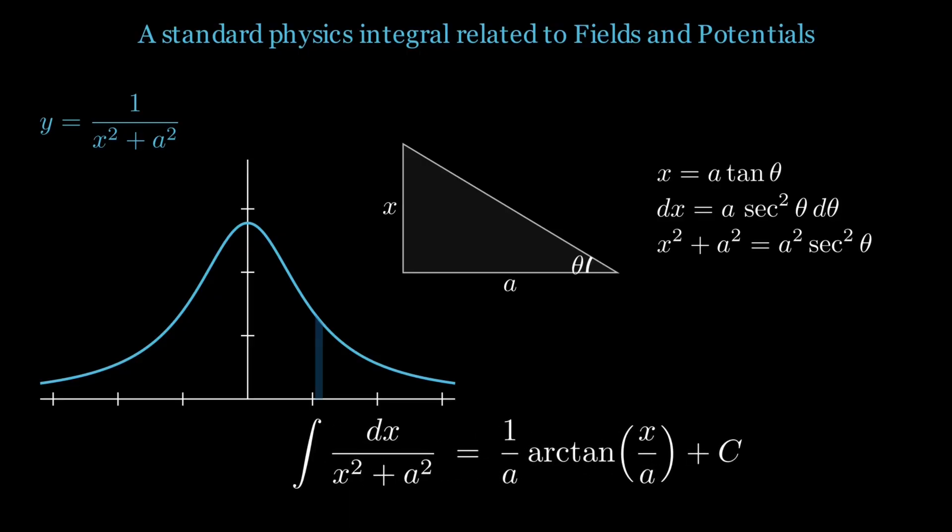Switching to that angular coordinate stretches the strips just right so the messy denominator becomes constant and the area adds up cleanly. Converting back gives an arc tangent, a function that naturally encodes how contributions taper off with distance. This pattern shows up everywhere inverse square behavior hides inside geometry, from on-axis fields to potential profiles.